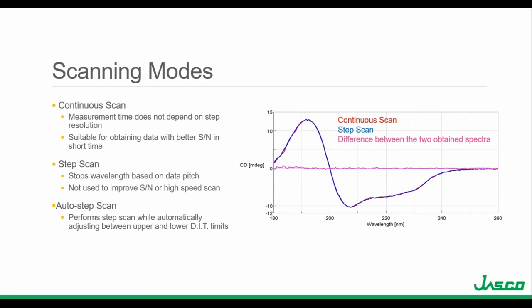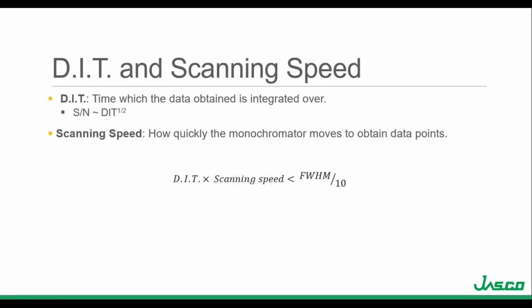The figure on the right shows a continuous and step scan overlaid in red and blue respectively, with the difference shown in pink — there's virtually no difference between the two scans if the correct measurement parameters are selected. Going forward, I'll assume we have selected the continuous scan mode. The DIT and the scanning speed are extremely important to optimize for accurate data and good signal to noise. The DIT is the digital integration time — the time in which the data is integrated over. The detector sees incoming photons and passes them along for signal processing; the DIT specifies how long the detector sees these packets before sending information to be digitized. The square root of the digital integration time is proportional to the signal to noise.